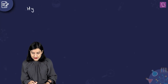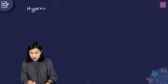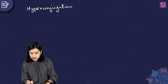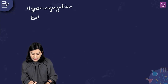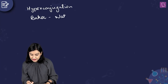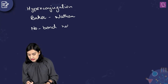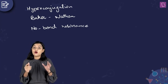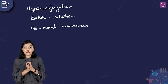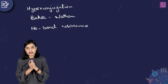So first of all, what is hyperconjugation? Whether you see the hyperconjugation effect, or if you see something called the Baker-Nathan effect, or if they talk about no bond resonance — you need to understand that all three of these are referring to the same electronic effect.